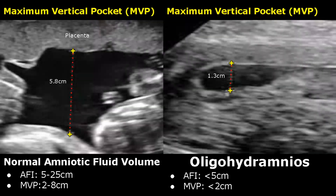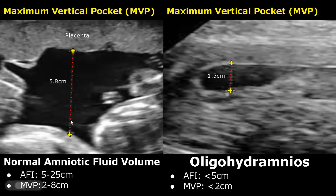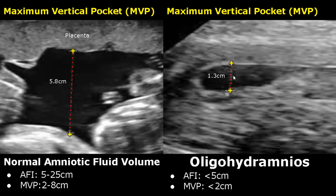Using the Maximum Vertical Pocket method, the normal value is between 2 to 8 cm. In the normal image, the single deepest pocket measurement is 5.8 cm, so that is normal. In the Oligohydramnios case, we see a very small area of fluid — the measurement is only 1.3 cm.